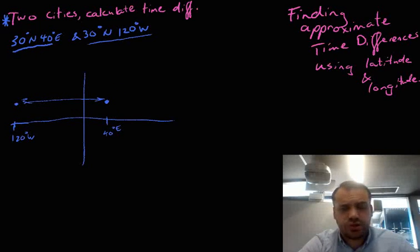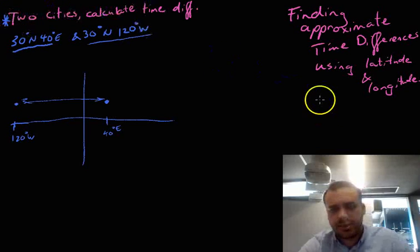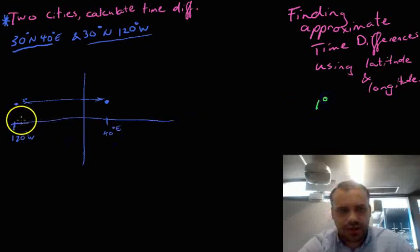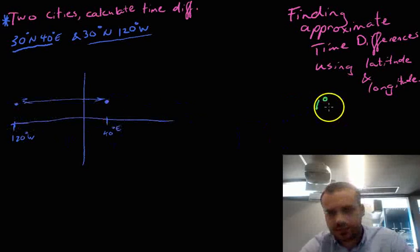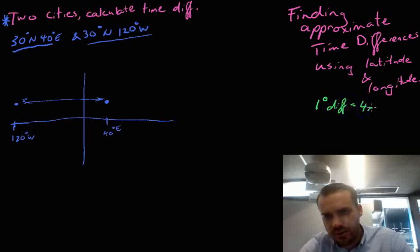Now it's really straightforward because there's this little handy tip for you. One degree difference, now that's only if it's east and west, one degree difference equals four minutes.